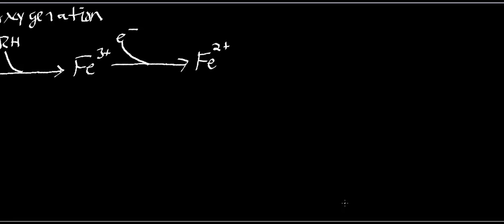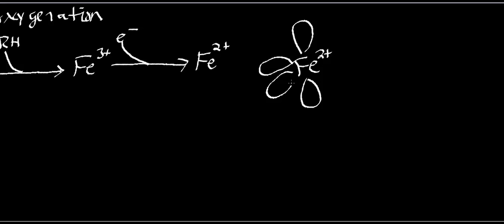I want to do this in a way that's fairly understandable, because the next couple of steps are sometimes the most misunderstood. Let me draw this iron in this way. We know it has a 2+ charge. Let me just draw some orbitals around it — obviously the iron is going to have orbitals with electrons. And if there's a 2+ charge, there are empty orbitals. But essentially there are just electrons there.